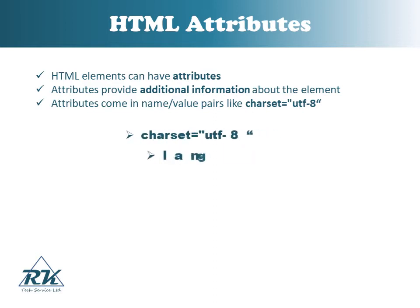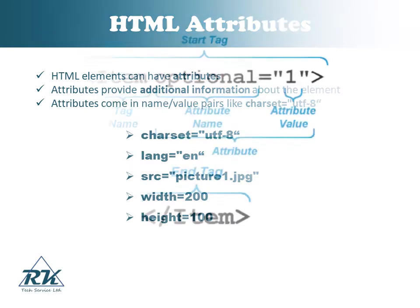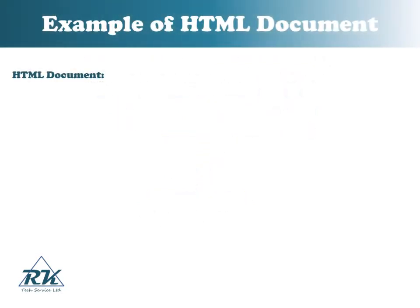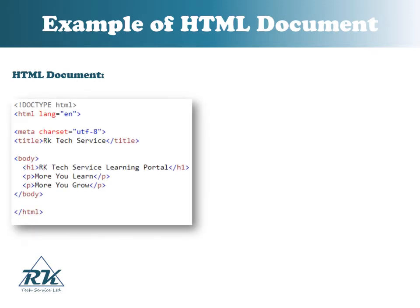These are some examples of HTML attributes. Example of an HTML document. HTML elements are the building blocks of HTML pages. The DOCTYPE html declaration defines this document to be HTML5.